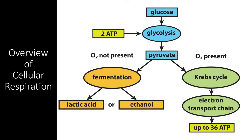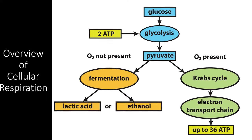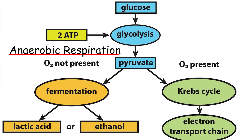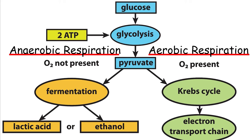Cellular respiration is a metabolic process within cells that extracts energy from biological macromolecules in order to produce ATP. This ATP can then be used to power important reactions throughout the cell that help the cell maintain homeostasis, grow, and reproduce. There are two basic types of cellular respiration: anaerobic respiration and aerobic respiration. Both of these forms of cellular respiration start with the breakdown of glucose, a process known as glycolysis.